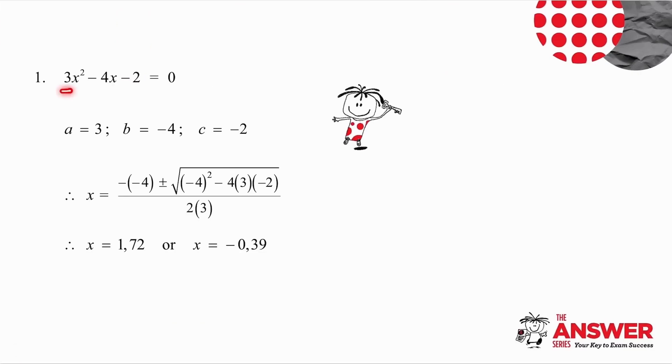In the first example your a is 3, b is minus 4 and c is minus 2. I substitute it into the quadratic formula.